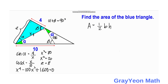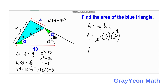For the final step of Method 1, we are ready to find the area. Area equals one half times base times height. The base is 4 and the height is 8, so area equals one half times 4 times 8 equals 4 times 4 equals 16 square units. That is our answer for the first method.